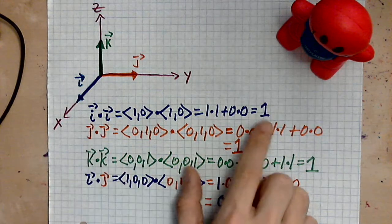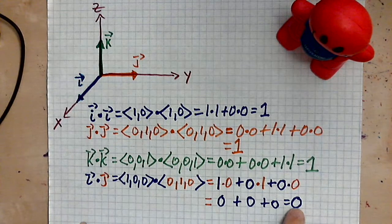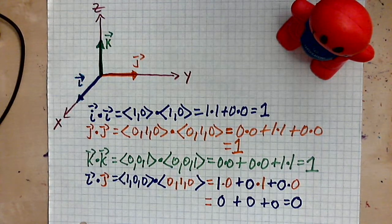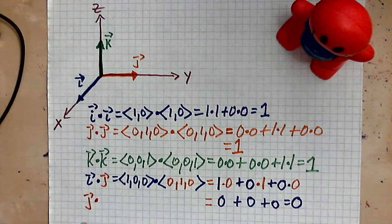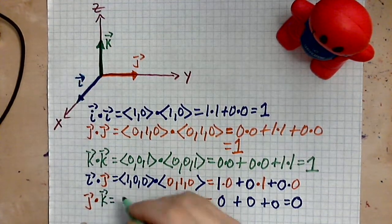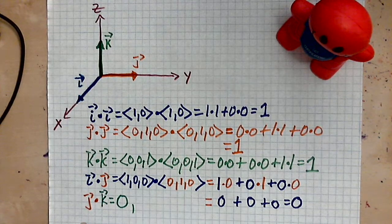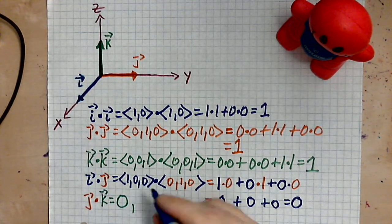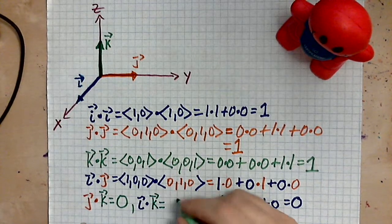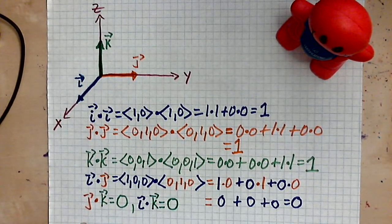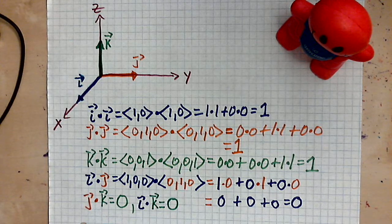Then you have your I dotted with I is positive 1. J dotted with J is 1. K dotted with K is 1. I dotted with J as I've shown you here is 0. And the other facts are these: J dotted with K also equals 0, and lastly, I dotted with K also equals 0. That's it. So that's how you find the basic dot products of the unit vectors with themselves, and these are the results.